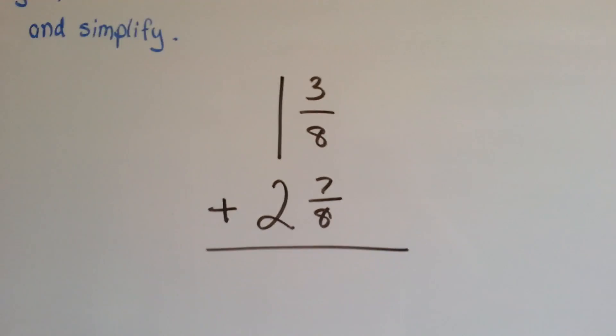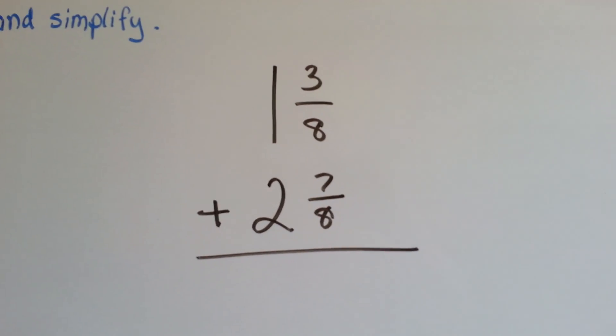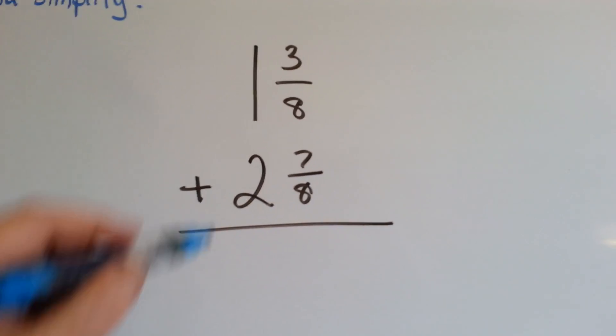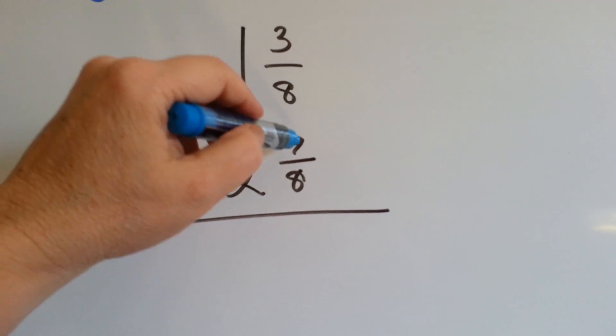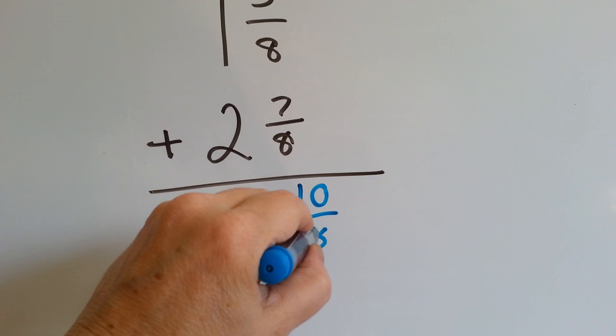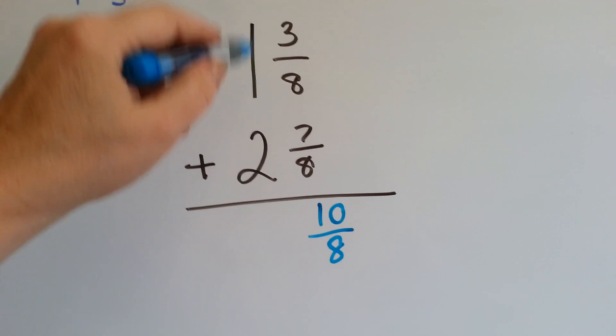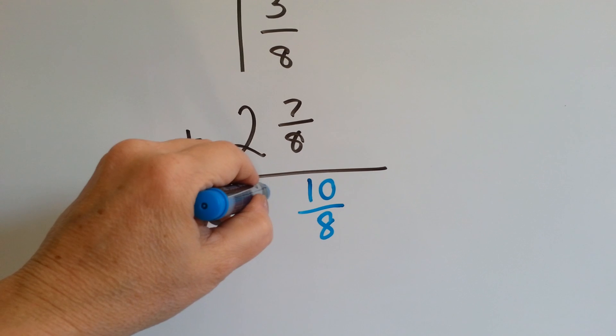Let's try this one. 1 and 3/8 plus 2 and 7/8. So, let's add the 3/8 to the 7/8. 7 and 3 is 10, so that gives us 10/8, and our whole number is 3. 1 plus 2 is 3.